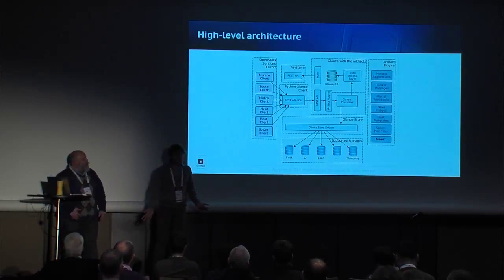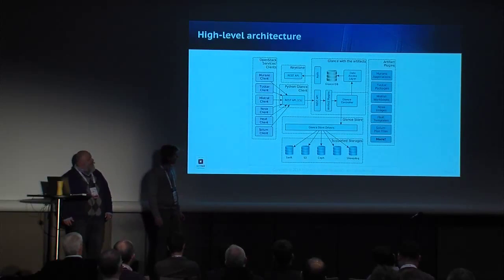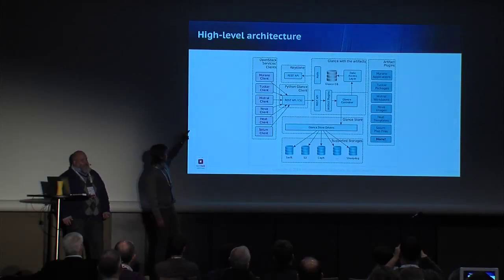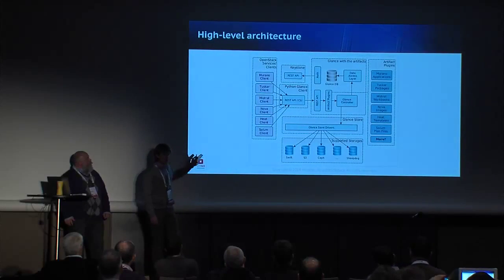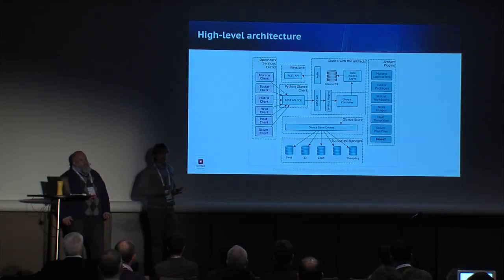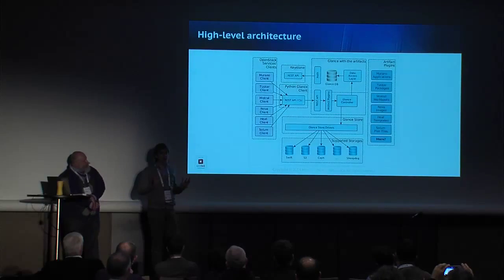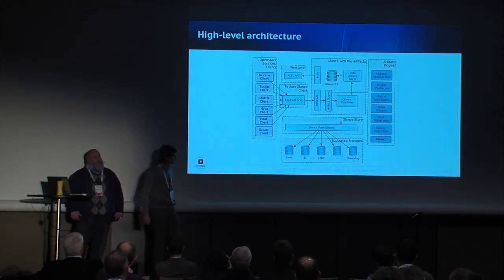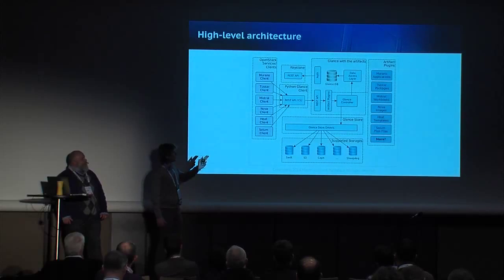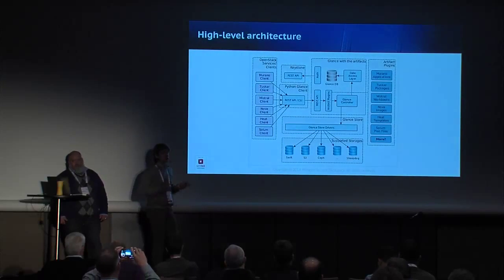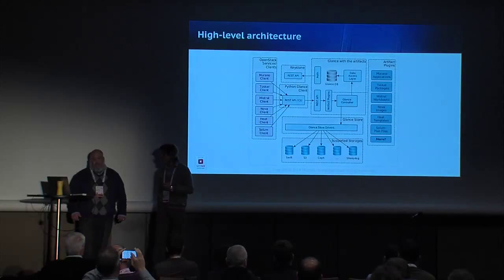Here is the high-level architecture diagram. The important part is that there are Pythonic clients for particular projects — HeatClient, MuranoClient, MistralClient, NovaClient — which use artifacts of particular types. They use GlanceClient as a dependency and wrap it for fetching particular artifact types from Glance storage. Everything else remains the same. We integrate the plugin layer behind the primary Glance API; all other Glance components — backend stores, database, notification layers, policy enforcements — remain in place.